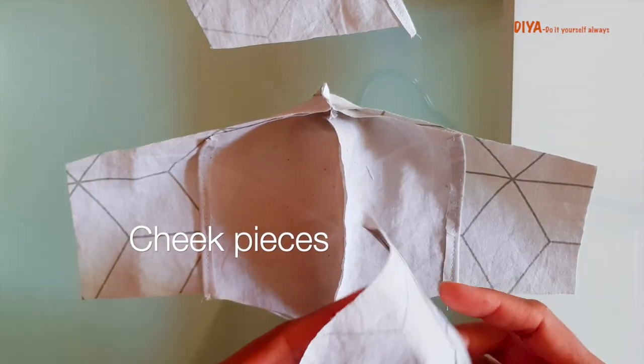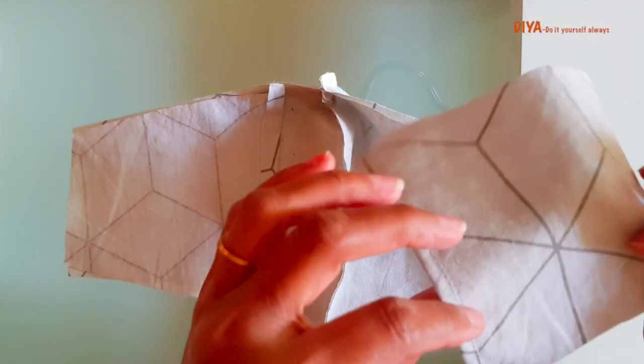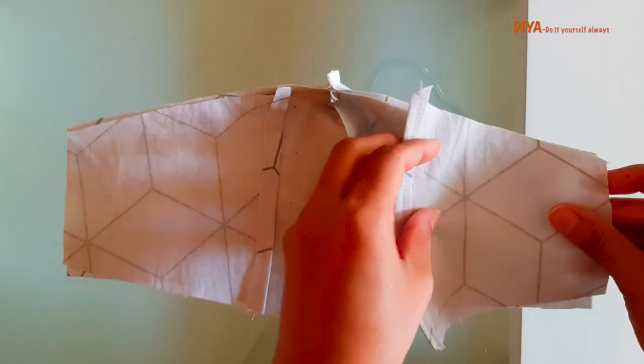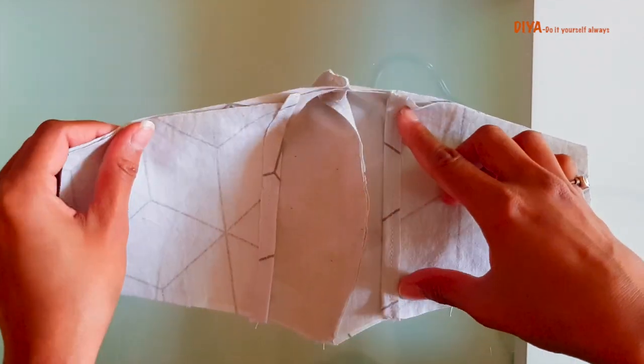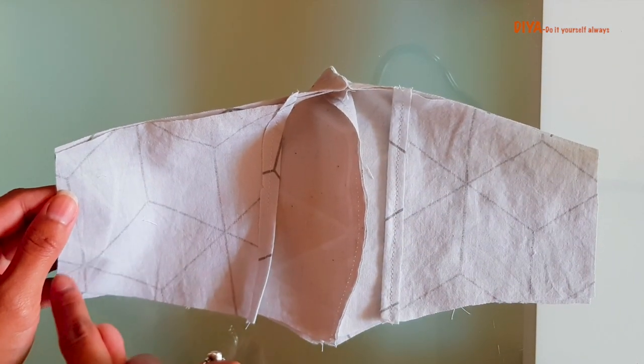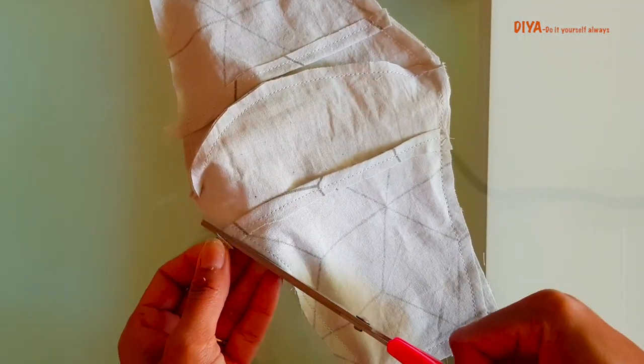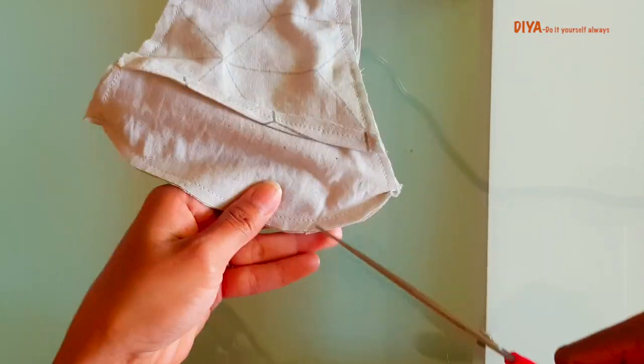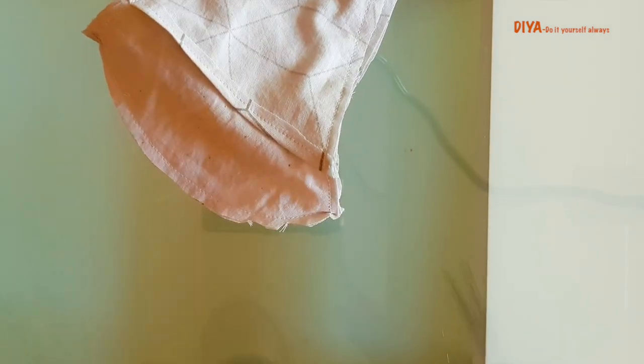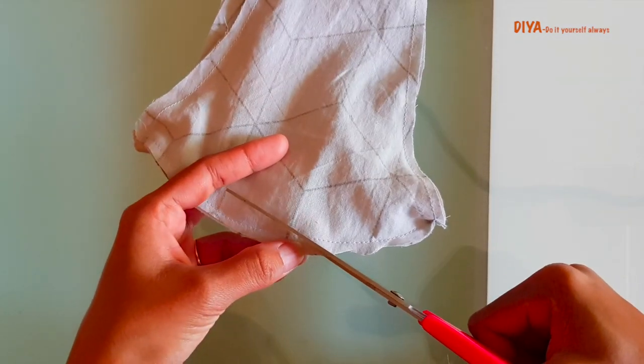Now take the cheek pieces and lay it on the face piece like this. This is the left one and this is the right side piece. Now we'll sew all the edges of this mask. Once you are done with the stitching of the corners, you need to cut the excess fabric from the corners just like this. Here at the curved sides, I'm just notching these little parts of fabric so that there will not be bulk of the fabric when we flip the mask.